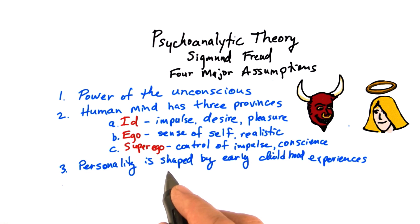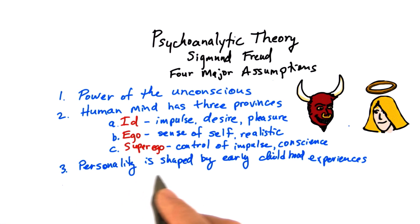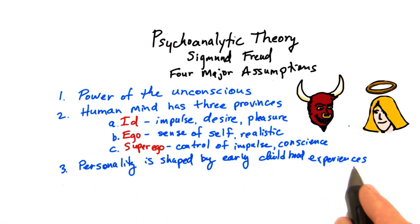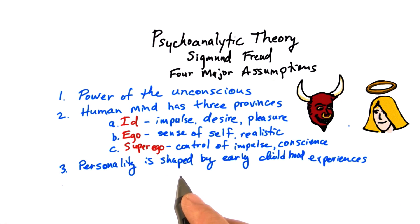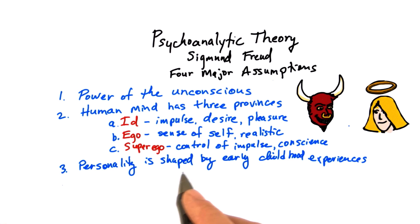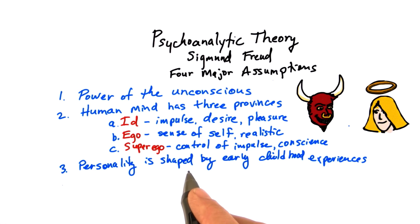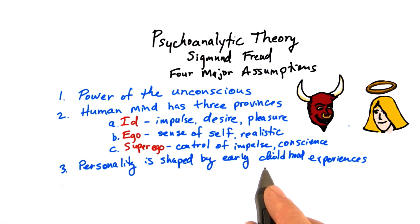The third assumption Sigmund Freud made is that personality is shaped by early childhood experiences. This may not seem radical to us now, but in his day people did not make that assumption — they assumed childhood experiences really didn't matter much. Freud argued otherwise.